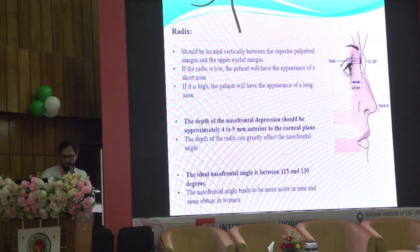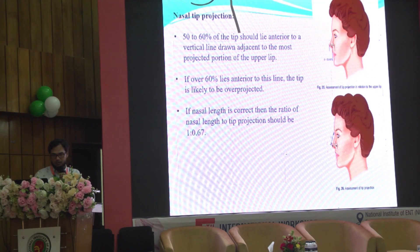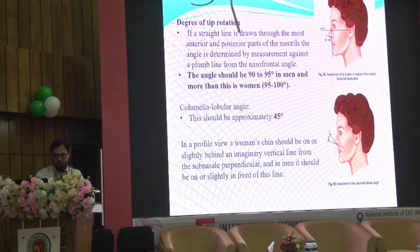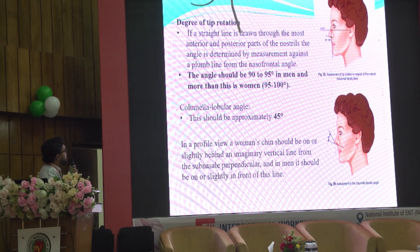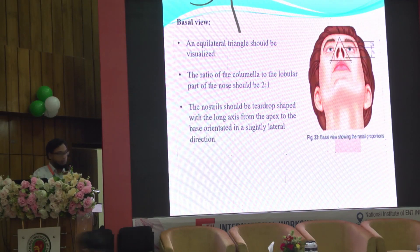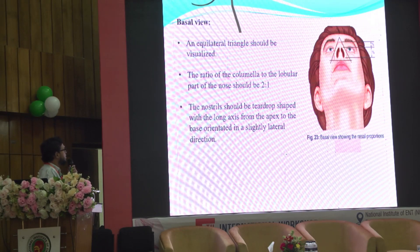The ideal nasofrontal angle is 115 to 130 degrees, tending to be more acute in males and more obtuse in females. Tip projection is from the alar crease to the tip and is two-thirds of the dorsal nose length. Tip rotation angle is 90 to 95 degrees in men and 95 to 100 degrees in women. The columellar-lobular angle should be approximately 45 degrees. On basal view, an equilateral triangle should be visible, with a columellar-to-lobular ratio of 2:1 and teardrop-shaped nostrils oriented slightly laterally.